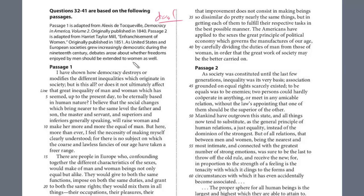A good technique, in my opinion, is to read each passage independently. Once you've read passage one, stop, and then only find the questions that deal with one. Once you've found all the independent questions for one, then you read two for the first time and find the independent questions for two. At the end, there'll be what are called compare and contrast questions, where you're comparing one and two, and you do those at the end.